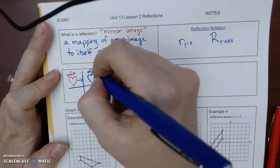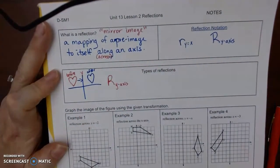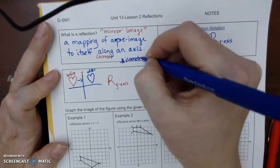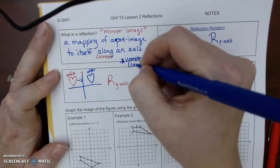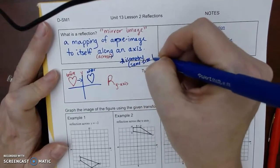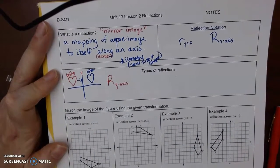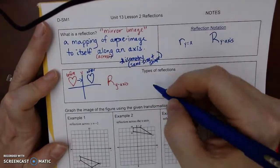Okay, so it preserves the shape, which is called an isometry, same size and shape. The orientation can be different, but it doesn't get smaller or bigger. Okay, another type would be if we have the reflection over the x-axis.